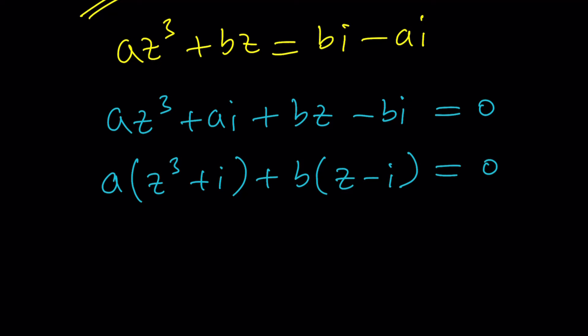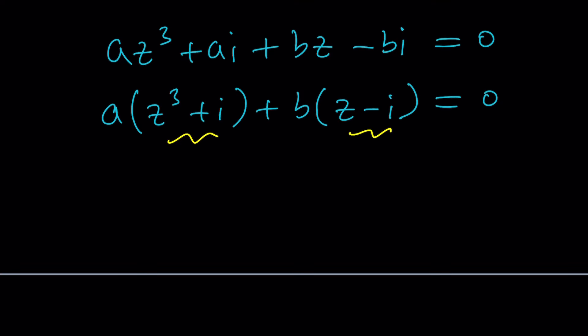Well, we were expecting to get the same thing from here. But guess what? Z cubed plus I is divisible by Z minus I. How do I know that? Because I is negative I cubed. So I can replace I with negative I cubed. And how do I know that? Because I cubed is negative I. Therefore, it works. And now this is factorable.